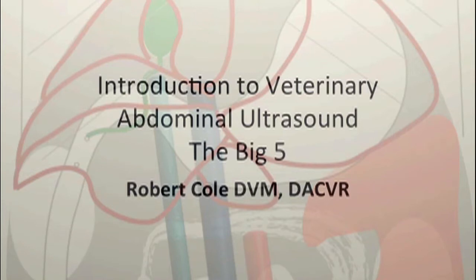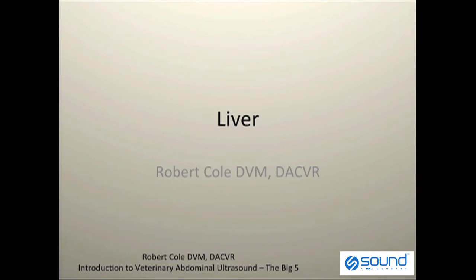We're going to start with an introduction to veterinary abdominal ultrasound, specifically the big five. This will include the liver, spleen, both kidneys, and the urinary bladder. We'll begin with an evaluation of the liver.